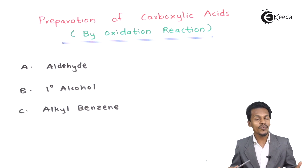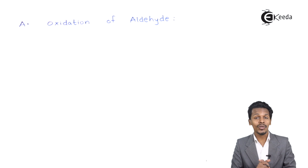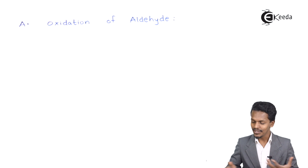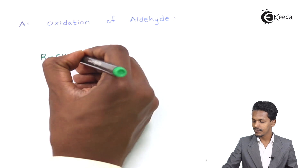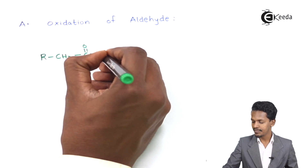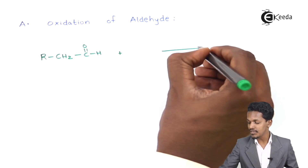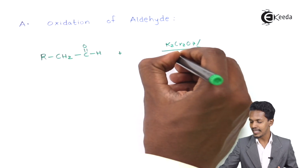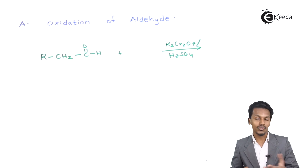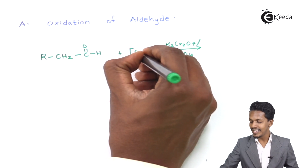Let us discuss how we can prepare carboxylic acid by oxidation of aldehyde. For the general reaction, consider RCHO — an aldehyde — undergoing oxidation in the presence of K₂Cr₂O₇ under acidic conditions with H₂SO₄. K₂Cr₂O₇ is an oxidizing agent that provides nascent oxygen.